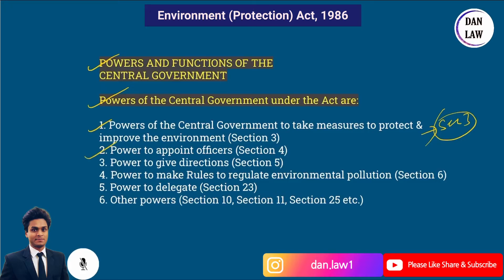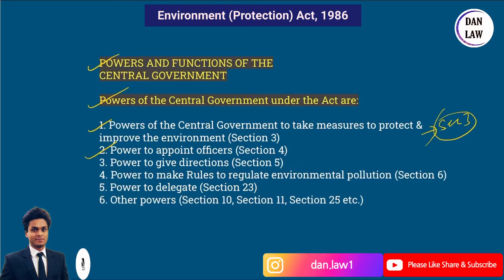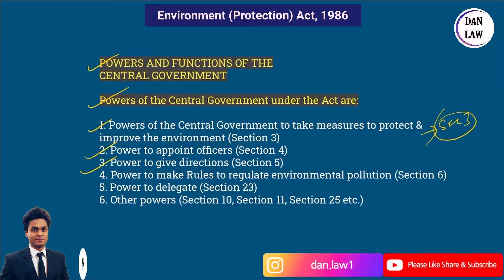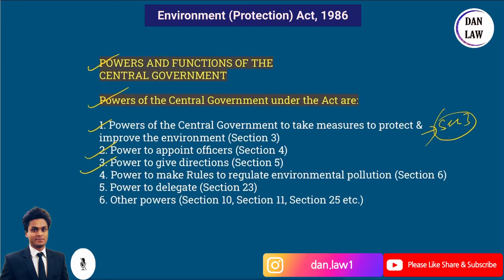Section 4 deals with the power to appoint officers. Section 5 deals with the power to give directions. Under Section 5, the central government has the power to issue directions for the closure, prohibition, or regulation of any industry, operation, or process, as well as the stoppage or regulation of the supply of electricity. These things are discussed under Section 5.